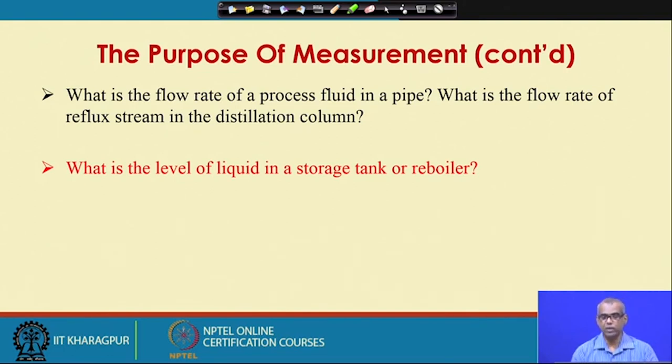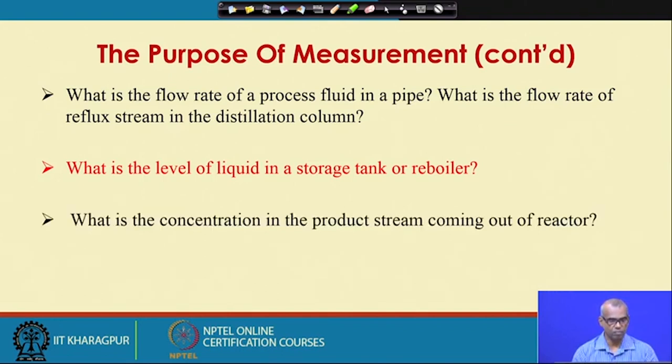For a reboiler, a definite level must be maintained in the reboiler of a distillation column, so you should know the liquid level there. What is the concentration in the product stream coming out of the reactor? It is important to know the concentration because that reflects the conversion you are achieving. By analyzing the concentration of the product stream you know whether you are meeting your target. Concentration measurement, particularly online measurement, is not very easy.